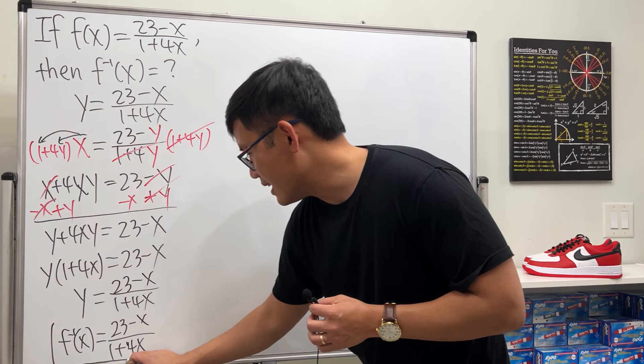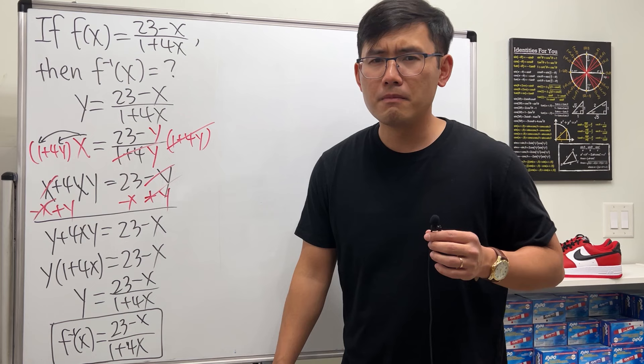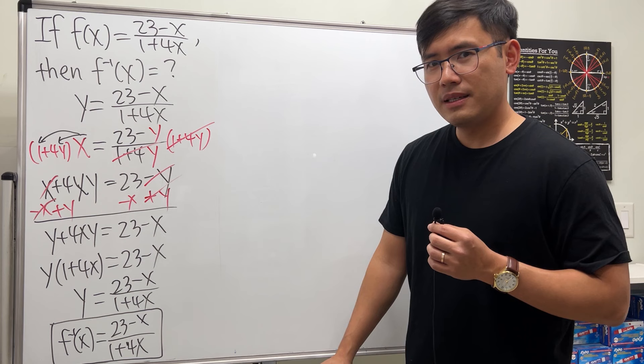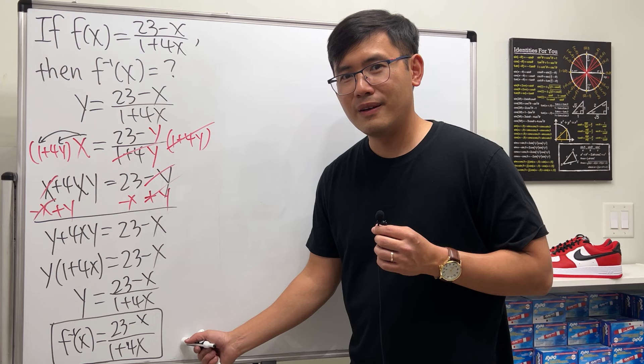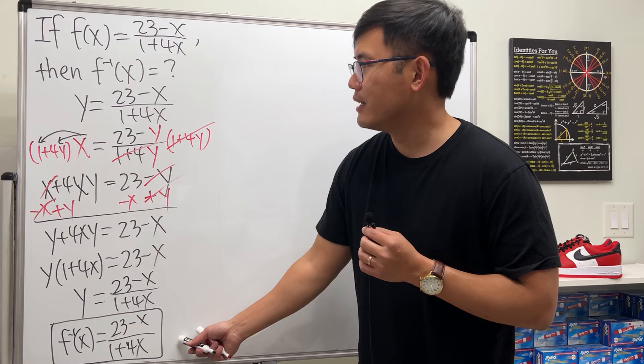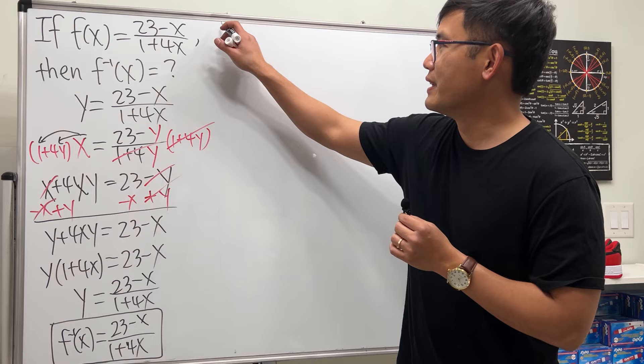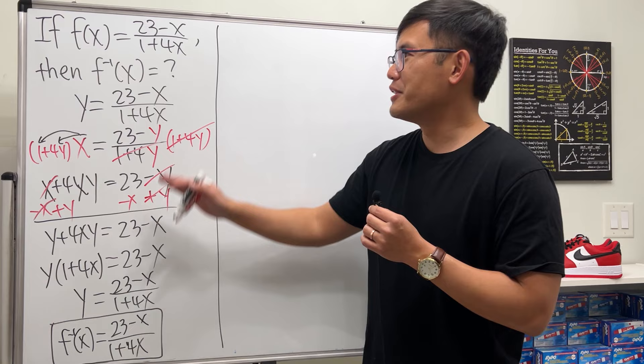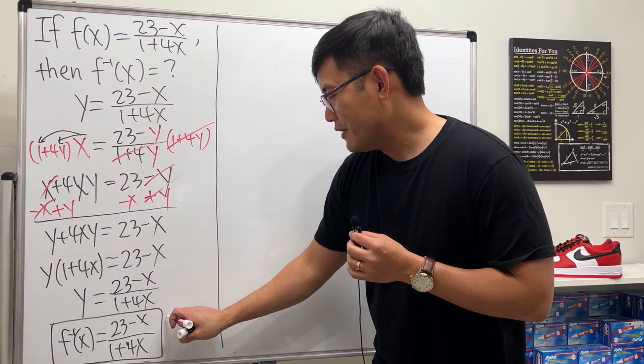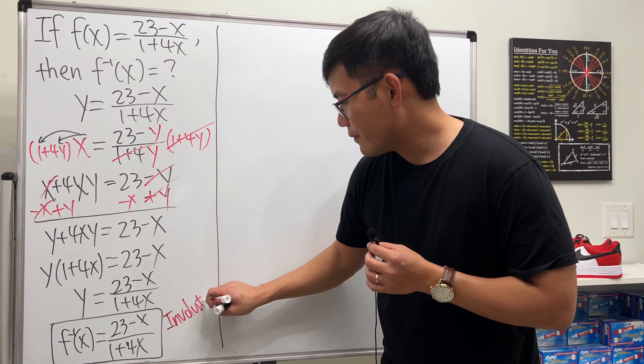We get f inverse of x equals (23 minus x) over (1 plus 4x) — which is exactly the same as the original function! Does this feel like déjà vu? Notice that (23 minus x) over (1 plus 4x) is the same as what we started with. We didn't do anything wrong — the inverse really is the same as the original in this case.